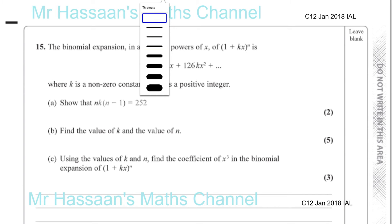In this question, we are told that in ascending powers of x, 1 plus kx all to the power of n is given by 1 plus 36x plus 126kx squared, where k is a non-zero constant and n is a positive integer.